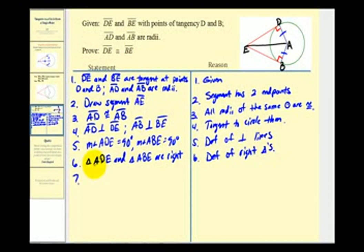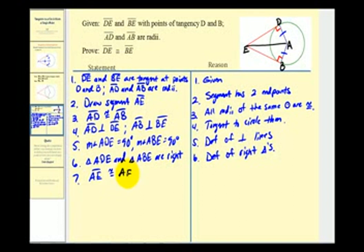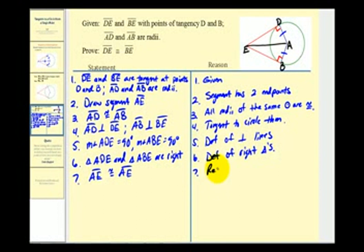Now, before we can state that these two triangles are congruent using hypotenuse-leg congruence, we need to state that segment AE is congruent to itself. This is by the reflexive property.